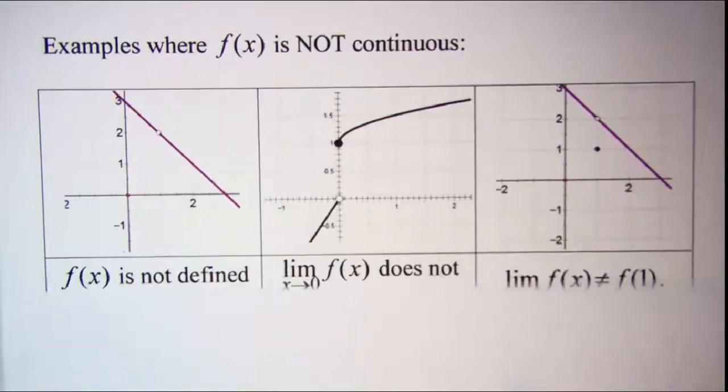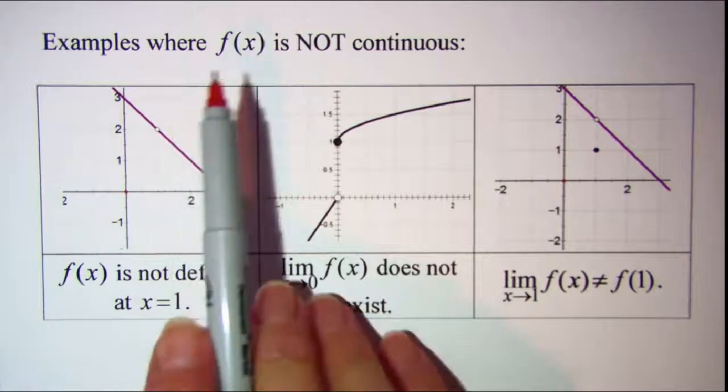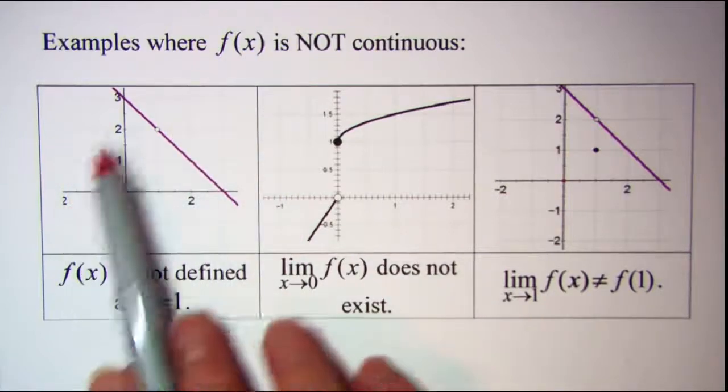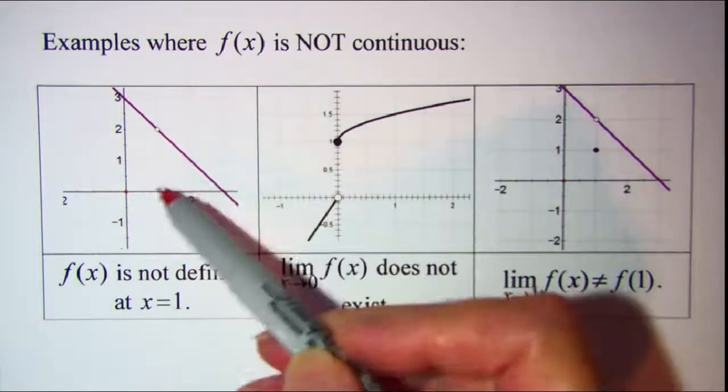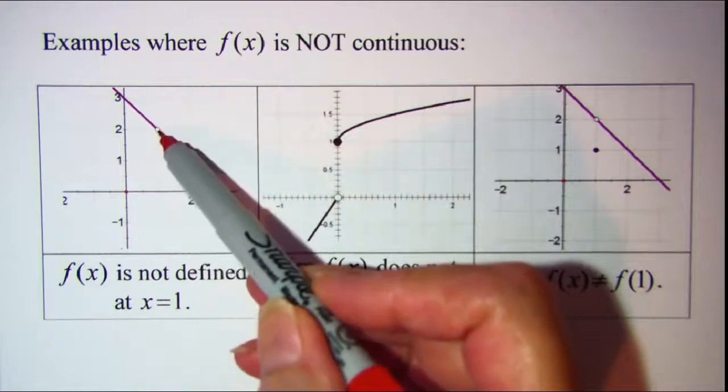f is not continuous in this example because f of x is not defined at x equals 1. Notice when x equals 1 we have a hole in the graph.